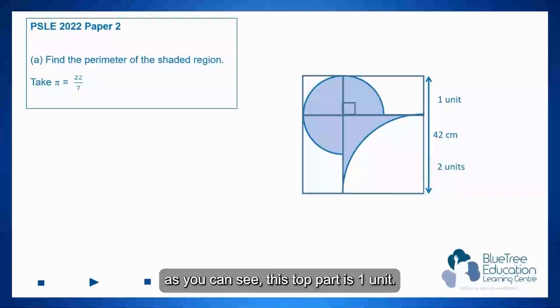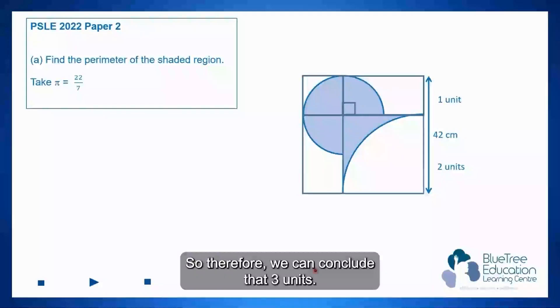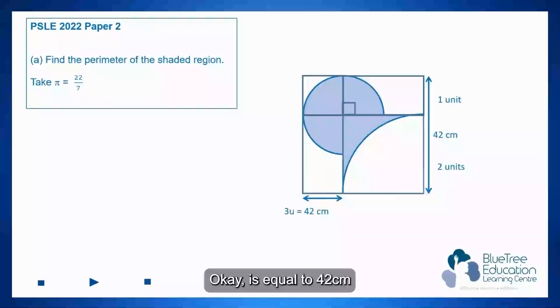As you can see this top part is one unit, and then the bottom is actually two units. So therefore we can conclude that three units is equal to 42 cm and one unit will be equal to 14 cm.